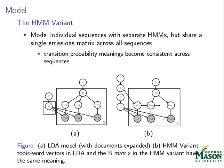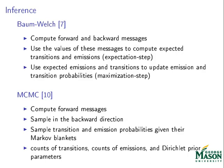I will now describe three methods for performing inference over our model. The first method is very similar to methods used in hidden Markov models. The Baum-Welch algorithm is an expectation maximization algorithm. In our case, however, because we have Dirichlet priors on the parameters, the Baum-Welch algorithm converges to an MAP solution rather than a maximum likelihood solution.